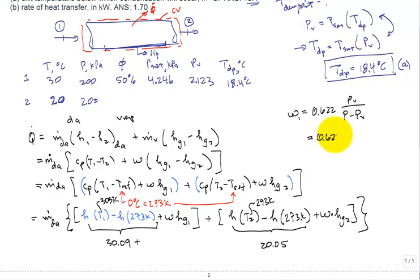So, omega 1 is equal to the omega 0.622 PV over P total minus PV. So, let me just knock out these numbers. 0.622, our vapor pressure 2.123, and then we have 200 minus 2.123. When we calculate omega, we find that that comes in at 0.00667.